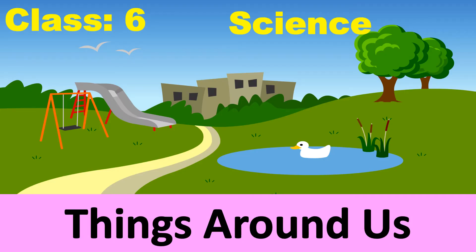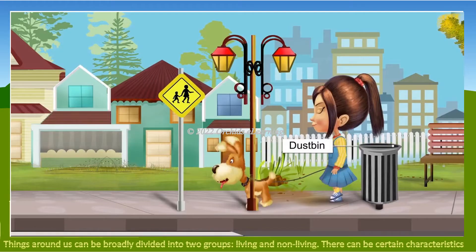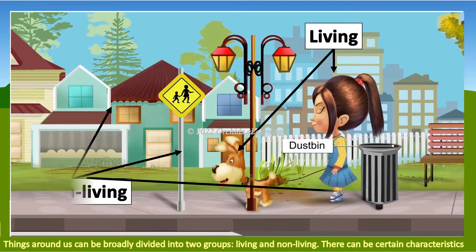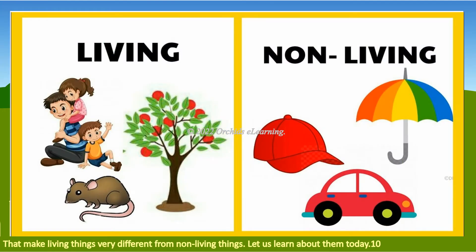Things around us can be broadly divided into two groups: living and non-living. There are certain characteristics that make living things very different from non-living things. Let us learn about them today.